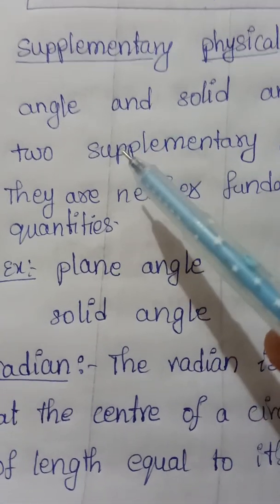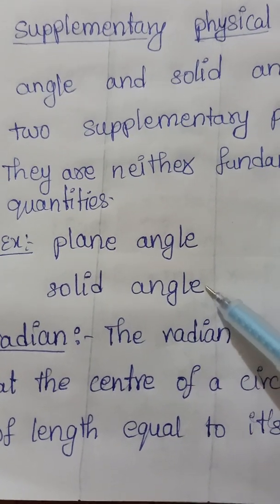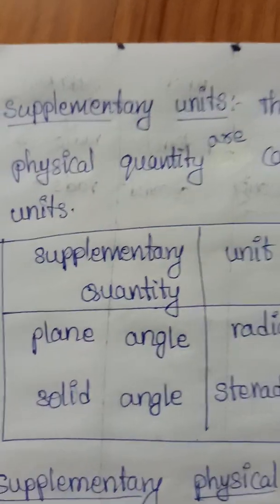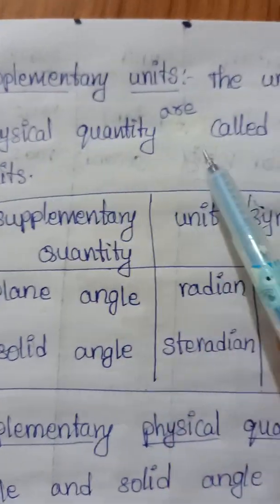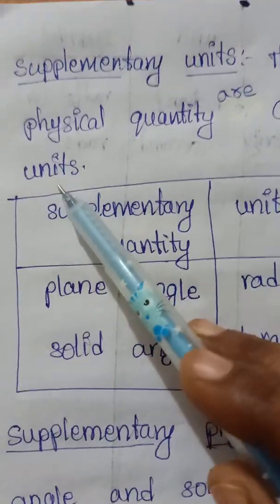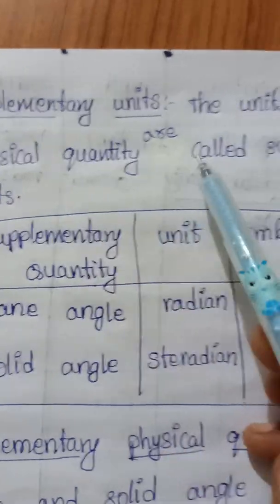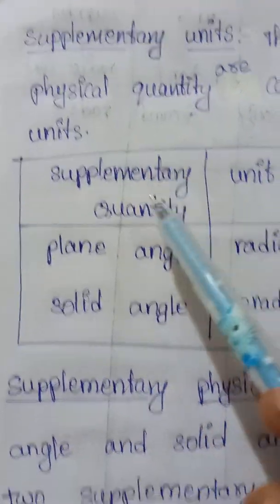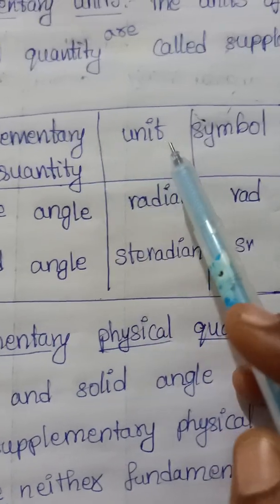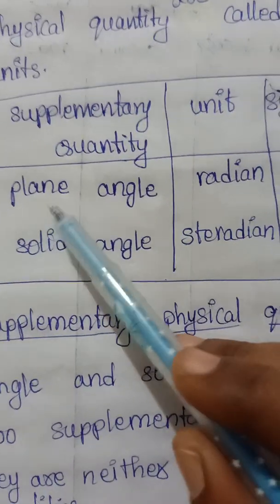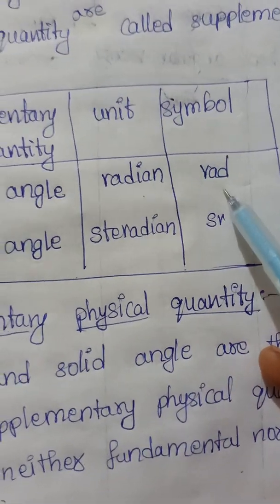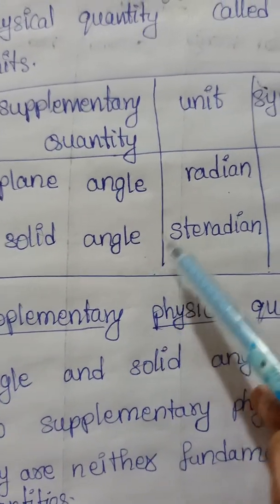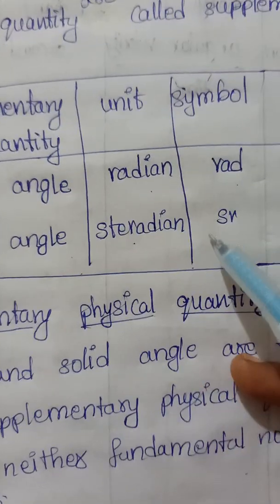The units of supplementary physical quantities are called supplementary units. The supplementary quantities and their unit symbols are: plane angle — unit is radian, symbol is rad; and solid angle — unit is steradian, symbol is SR.